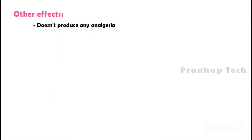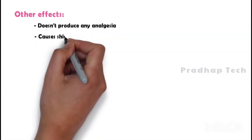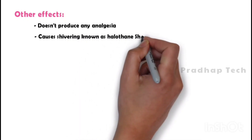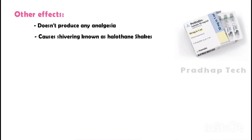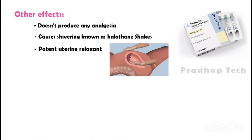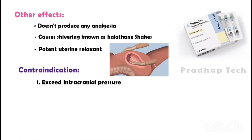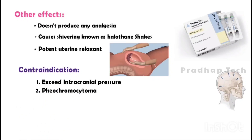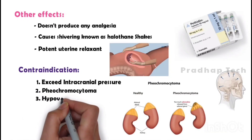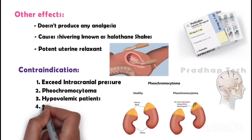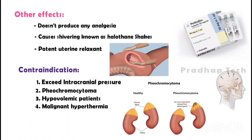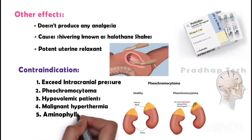Other effects: halothane doesn't produce any analgesia. It causes shivering known as halothane shakes, which can be reduced by giving pethidine. It is a potent uterine relaxant, making it the drug of choice for manual removal of the placenta. Pheochromocytoma — a hormone-secreting tumor in the adrenal glands causing high blood pressure — is a contraindication. Hypovolemic patients may trigger malignant hyperthermia. Aminophylline can cause arrhythmia with halothane.